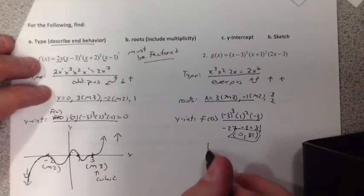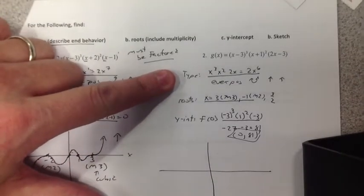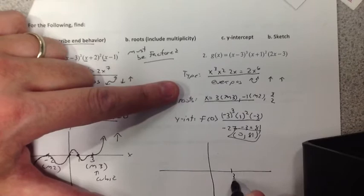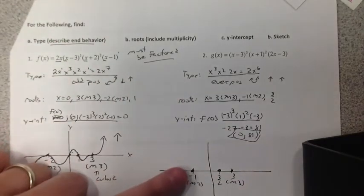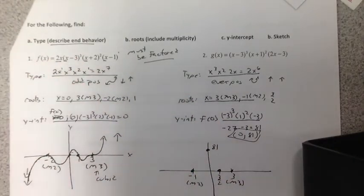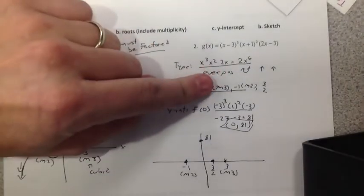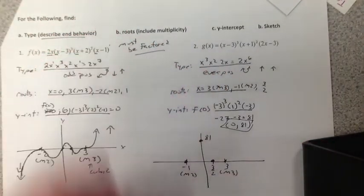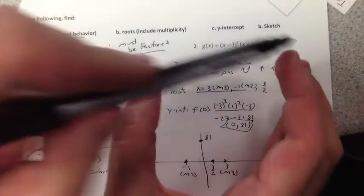So if I sketch this now, doesn't have to be anything perfect. Graph your roots. x equals 3. It's m3. Don't forget. Negative 1, m2, so I write it. And there's 3 halves. Now, I don't have 0 for my y-intercept, so I actually have to graph it. 81. So I graph my y-intercept as well. Now, remember the type. It's even positive. It looks like a parabola. That's what a parabola looks like. So at the ends, it's going to be up and up at the ends. So it's going to be up and up. So it starts up.